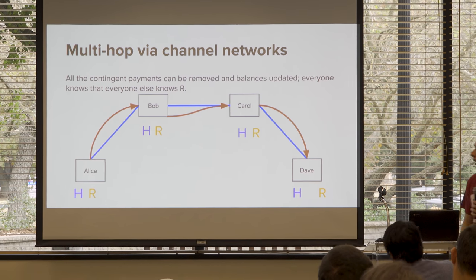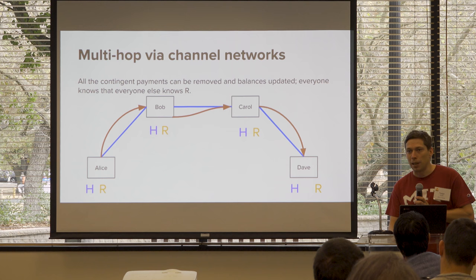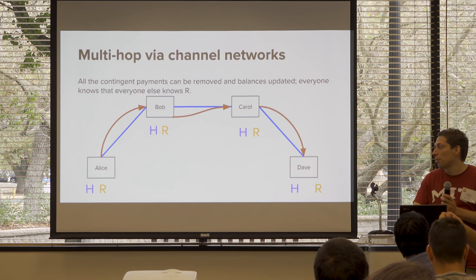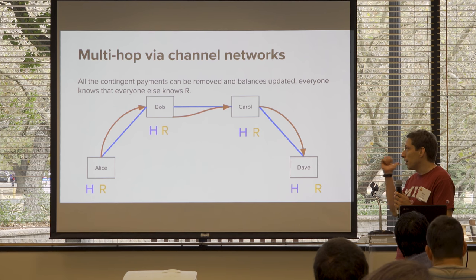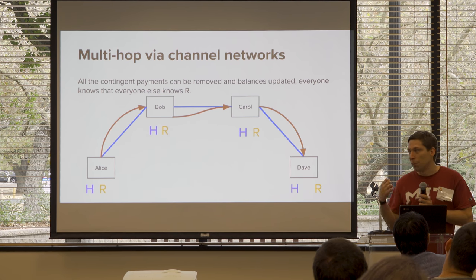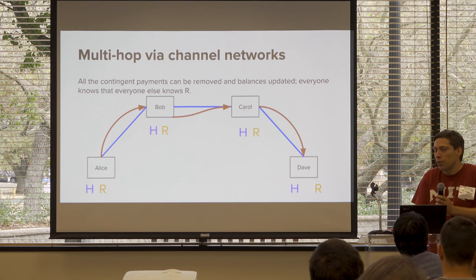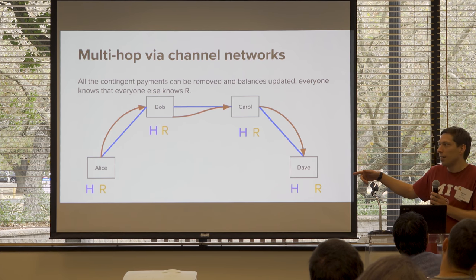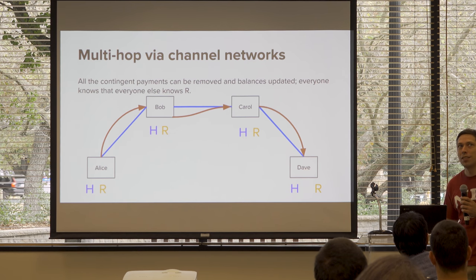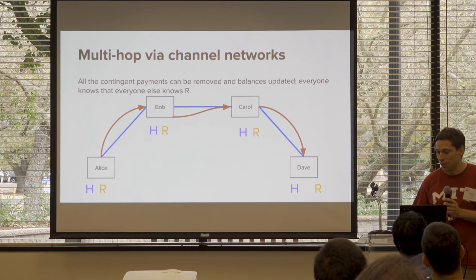Timing is important. If Alice waits a day before clearing this out, she could potentially grab the money back, and Bob will not allow that. If you've got this contingent payment and it's getting close timing-wise, Bob will close the channel. He's already on the hook — he already sent the money to Carol — and if he hasn't gotten the money from Alice free and clear, he'll close the channel, put R on the blockchain, and take it. The software will automatically do that if timing gets tight. This whole process should take a second or two; if it takes minutes or hours, channels start closing.